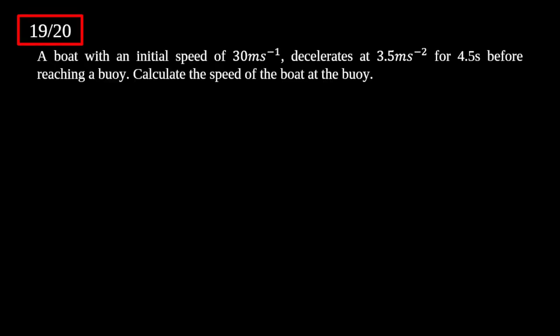The first question: a boat with an initial speed of 30 meters per second decelerates at 3.5 meters per second per second for 4.5 seconds before reaching a buoy. Calculate the speed of the boat at the buoy. I'll draw quickly to illustrate the situation — here's a boat and a buoy. It is initially moving at 30 meters per second and decelerates, so acceleration a equals negative 3.5 meters per second squared, and time is 4.5 seconds.